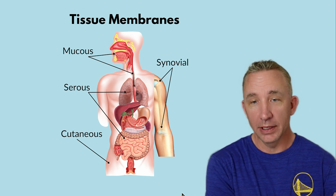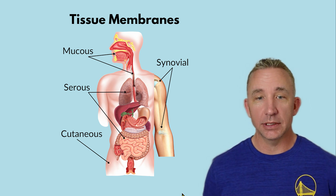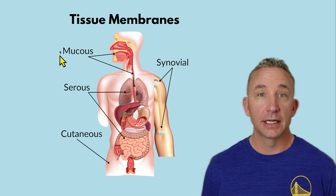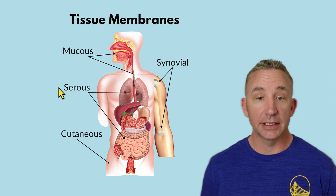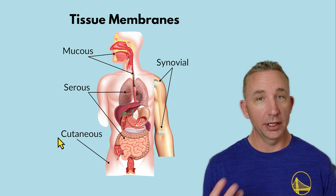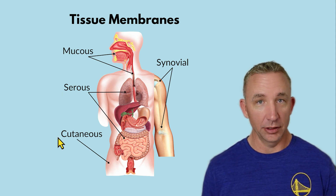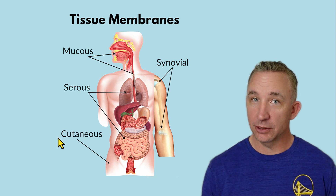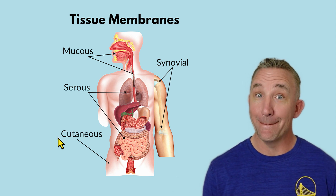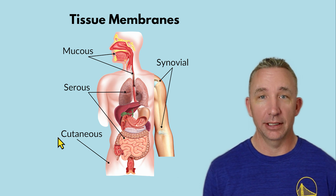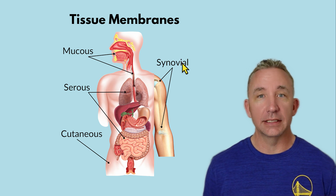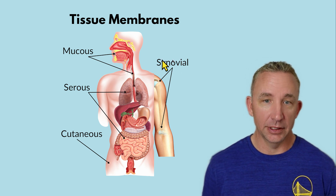When we look at the different types, on the left here, three of them — mucus, serous, and cutaneous — are all epithelial tissue. There are four number types of tissue in the body: epithelial, connective, muscle, and nervous. Synovial is a connective tissue.